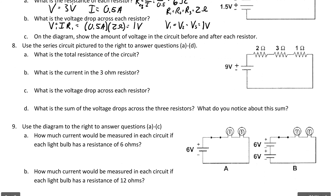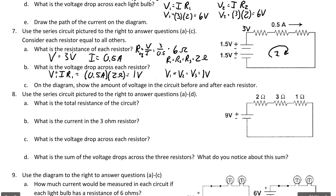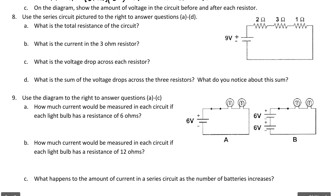On the diagram, show the amount of voltage before and after each resistor. The current flows clockwise. Starting at 3 volts supplied: after the first resistor—which uses 1 volt—there are 2 volts remaining. After the second resistor, there is 1 volt left. After the third, there are 0 volts left. The battery then pushes you back up to a potential of 3 volts.